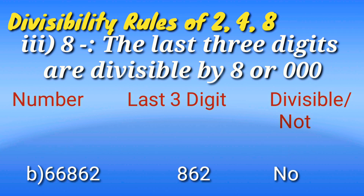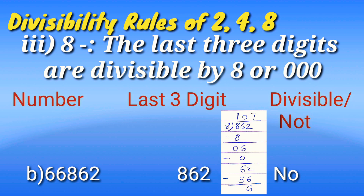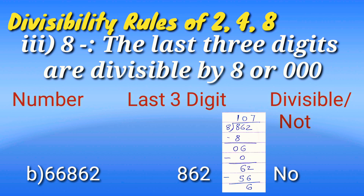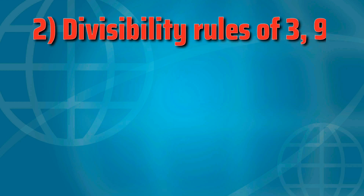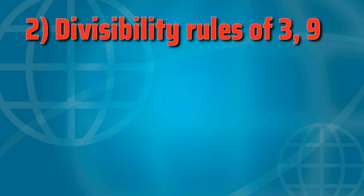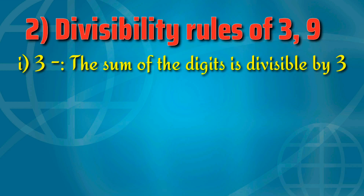Another example is 66,862. The last three digits are 862. 862 is not divisible by 8, so the whole number is not divisible by 8. Now we are moving on to our next part — Part 2: Divisibility rules of 3 and 9.